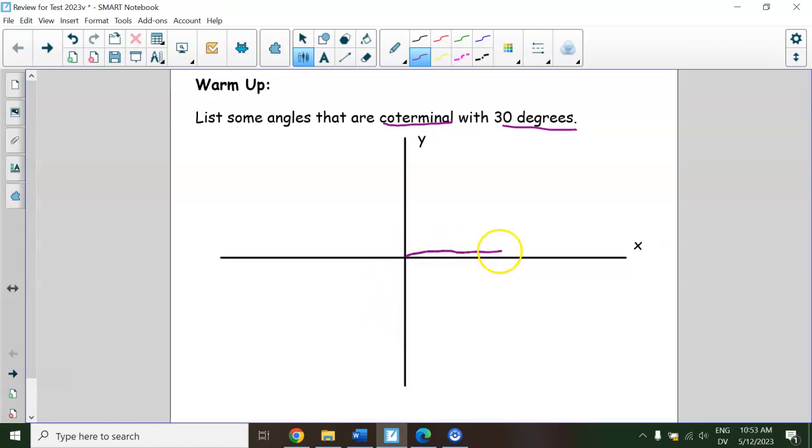If you forget what that word means, it means they just end at the same spot as 30 degrees. So you can draw a picture if you want, but you don't actually have to. So 30 degrees looks like this. You always start on the positive x-axis, and then if it's a positive angle you draw up, if it's negative you draw down. And then the trick for coterminal is you don't even really need a picture, you just add or subtract by 360s.